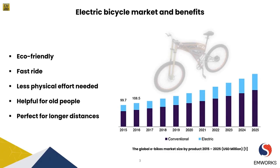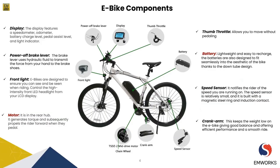Let's go through the different components of electric bicycles. An electric bicycle has many components — it's equipped with a display which shows your speed and battery charge level, a thumb throttle which allows you to move without pedaling, power brakes, front lights, speed sensors, and many other components. The important component we focus on in today's webinar is the motor, and of course the battery, which supplies the motor. Today we focus on motor design, which generates torque and helps propel the rider forward without pedaling.